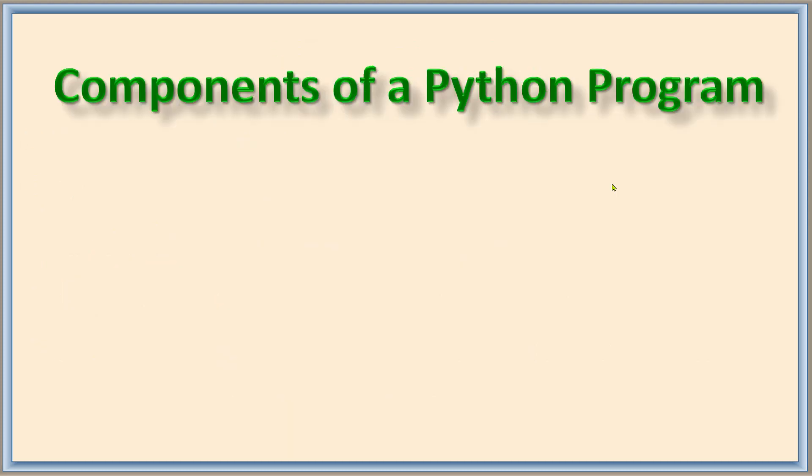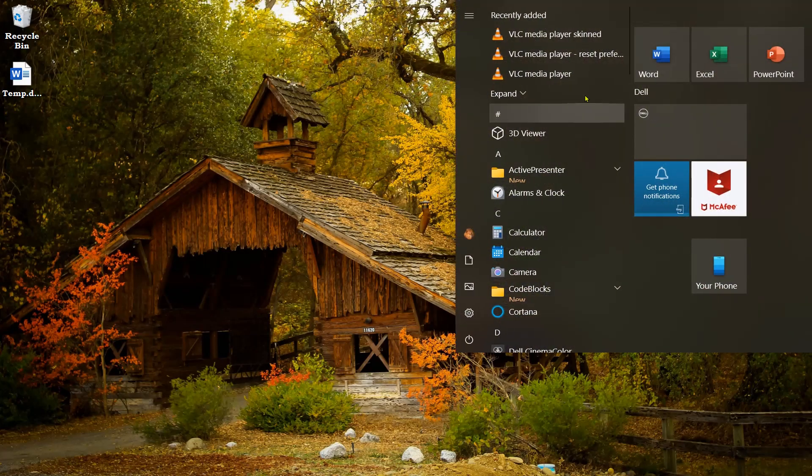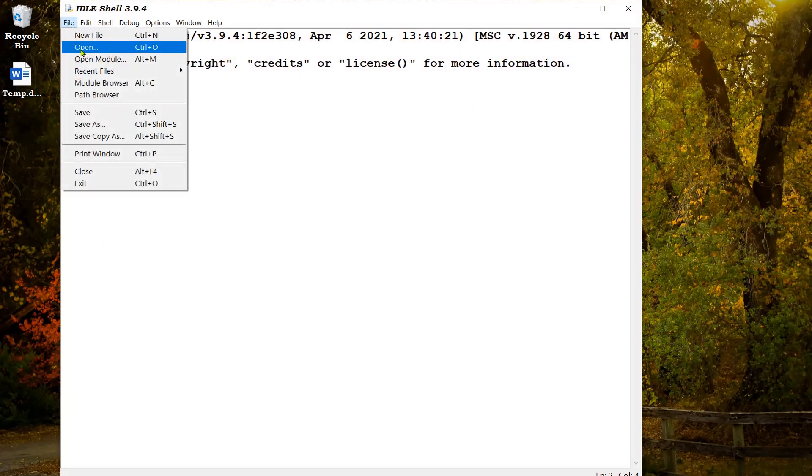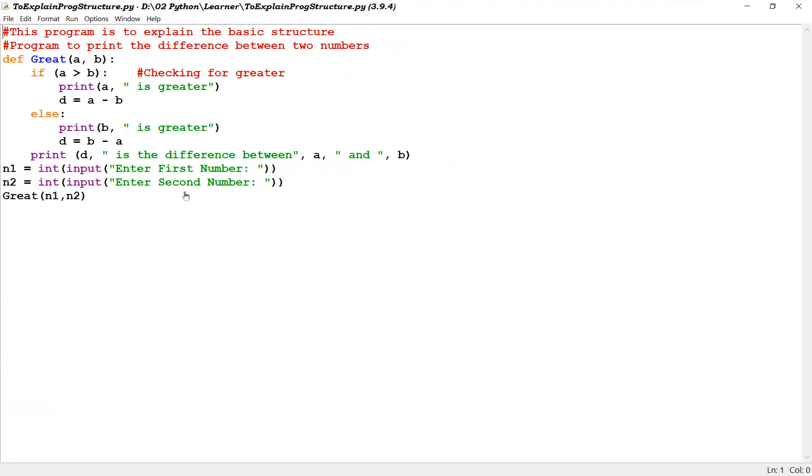So let us see the components of a Python program: comments, statements, keywords, identifiers, expressions, functions, blocks and indentation, symbols. I will explain all these using a simple program which is made for you. I try to put all the components of the program in this small program. This is a program which takes two numbers and then prints the greater number and also shows the difference.